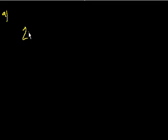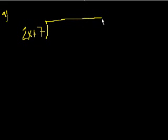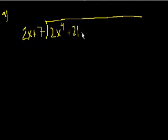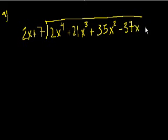They want us to divide 2x plus 7 into, it's pretty long so I'll give some space, 2x to the fourth plus 21x to the third plus 35x squared minus 37x plus 46. This might look daunting, but once you start, it's not so bad.